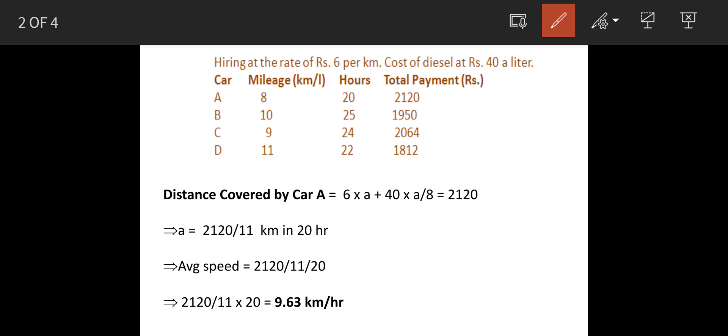So when we solve this we will get distance A as 2120 upon 11. We will not simplify this and this distance has been covered in 20 hours. So speed will be 2120 upon 11 again divided by 20, which is 9.63 kilometer per hour, the speed of car A.